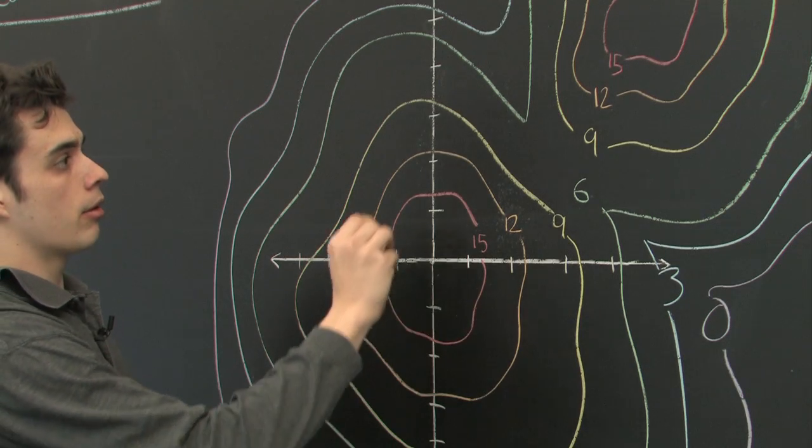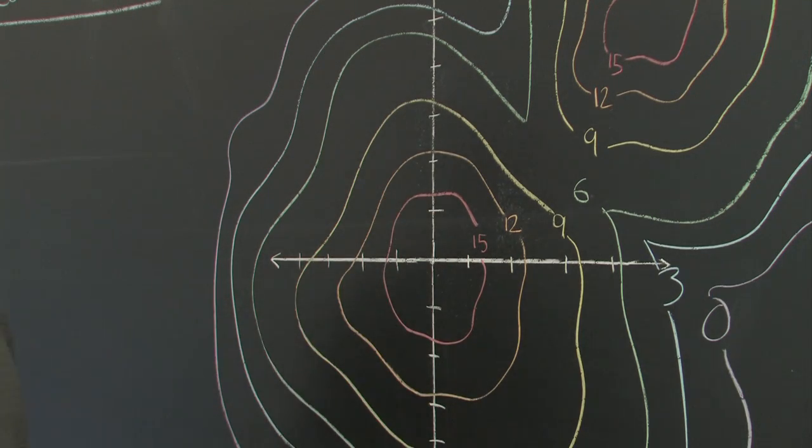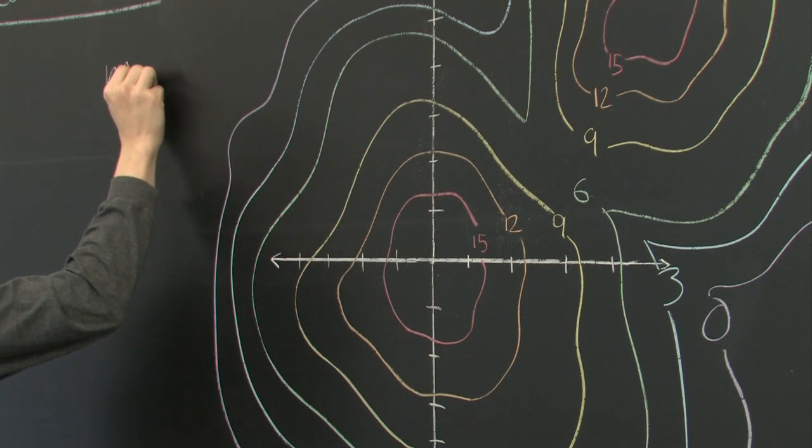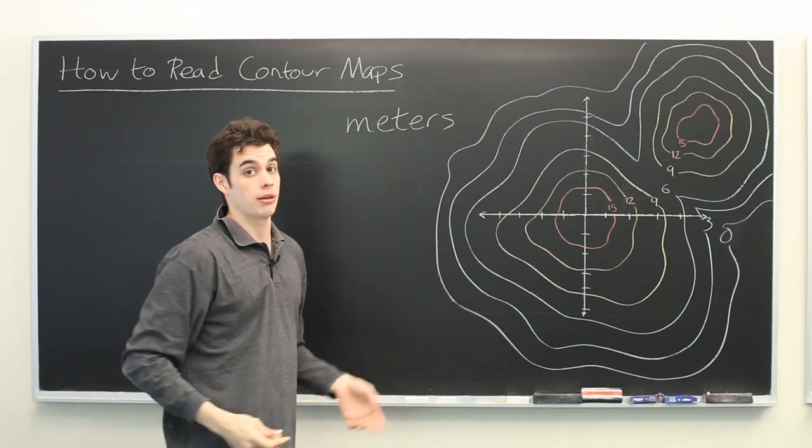You'll see we have a few different colored, not quite circles, but blob shapes along with some numbers here. And let's go ahead and assume that all of our measurements are in meters. But a contour map could use any measurement.